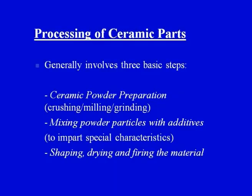First and foremost, let us revise what the various stages involved in making a ceramic product are. Processing of ceramic parts generally involves three basic steps. Step one is ceramic powder preparation. Some of the methods and techniques used for preparation of ceramic powders include crushing, milling, and grinding, which we have already discussed with the help of diagrams in our previous lectures. These are the mechanical ways of producing the ceramic powder.